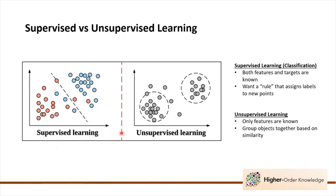On the other hand, for unsupervised learning only features are known. That means there are no labels involved, and the main purpose is to group objects together based on similarities. Here in this figure we can observe two very clear groups, and this can help us find patterns in the data that we don't really know.